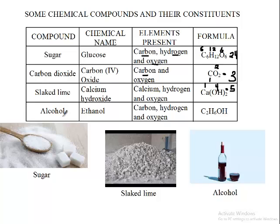Last in this video is alcohol. Alcohol is produced when fermentation takes place. Alcohol has its chemical name as ethanol. It is made up of carbon, hydrogen, and oxygen. There are two atoms of carbon, six hydrogen atoms, one oxygen, and then another hydrogen atom. So in all, the hydrogen atoms are seven and the other atoms are three, giving us ten atoms. You can see that the same carbon, hydrogen, and oxygen that make sugar also make alcohol.